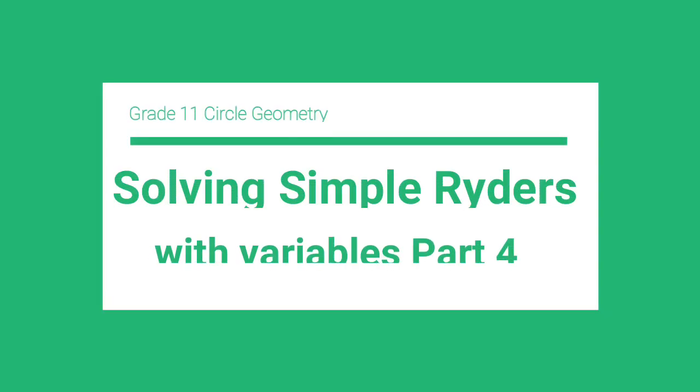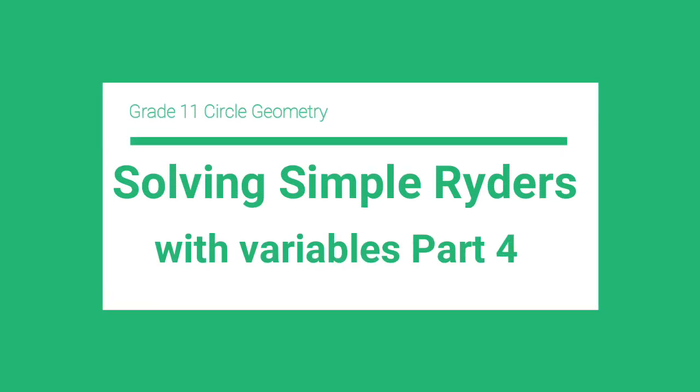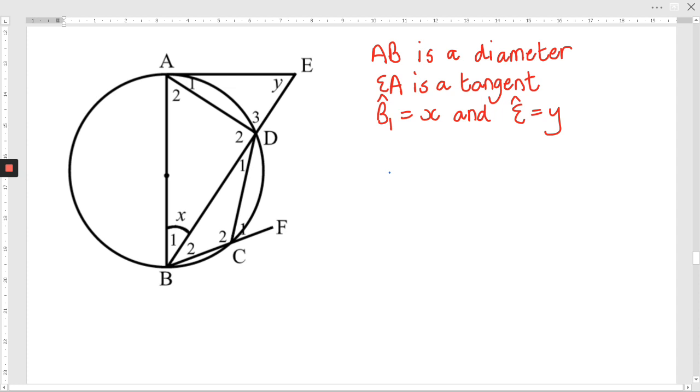We've got to start with what is given to us in the paragraph, and then we've got to look to see what that gives us in the diagram. So we're told that AB is a diameter.